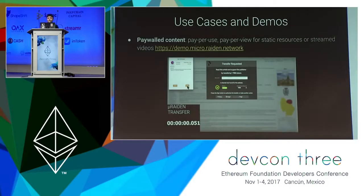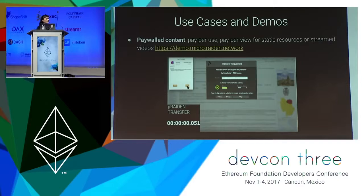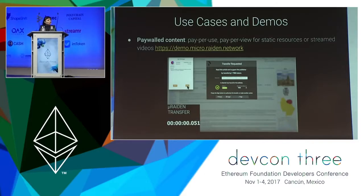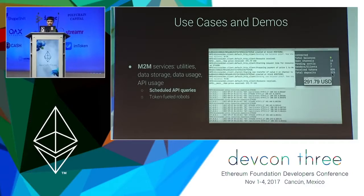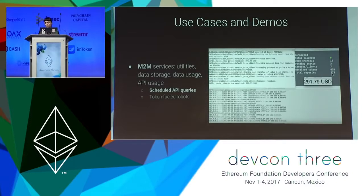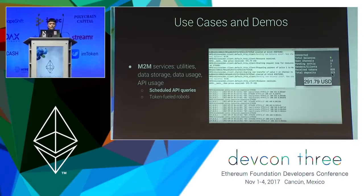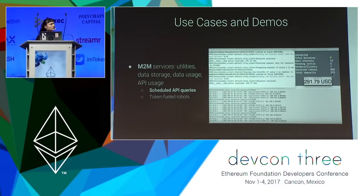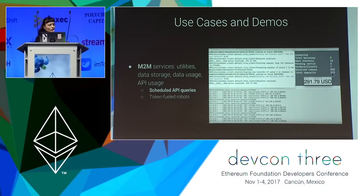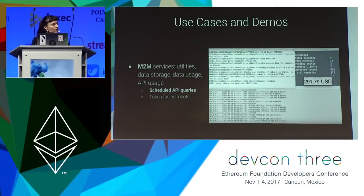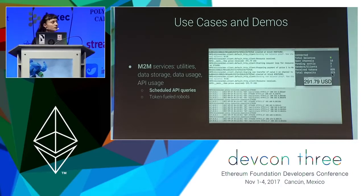So what can you build with Microradon? For human consumption, the most straightforward use case is pay-per-use. We already have two demos: one with a fortune cookie paywall that is online now, and an unpleasant alternate world where you pay for Wikipedia. But the most interesting use case is the machine-to-machine micropayments that you can do. If you have an API that you want to monetize, you can use Microradon. From utilities to data storage to scheduled API queries, we already have a machine-to-machine demo where we query the price of Ether in US dollars each second.